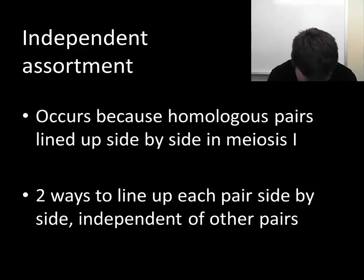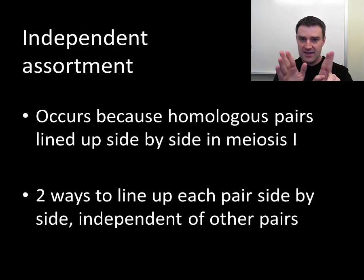They don't look up and down to see which way the other pairs are lining up. They're just brought side-by-side and each pair can line up two different ways. So that's independent assortment.